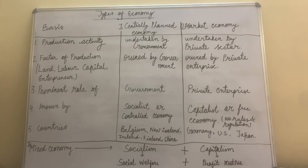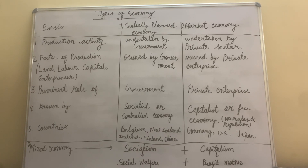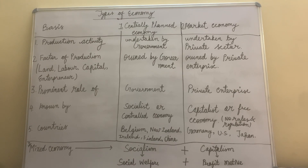Now we come to the third type of economy: mixed economy. Mixed economy is a combination of socialism and capitalism — it is a mixture of centrally planned economy and market economy. The motive of socialism is social welfare of society, while the motive of capitalism is to earn profit — maximum profit.